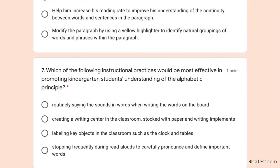Number seven: which instructional practice would be most effective in promoting kindergarten students' understanding of the alphabetic principle? Options are: routinely saying the sounds in words when writing them on the board; creating a writing center with paper and writing implements; labeling key objects in the classroom; or stopping frequently during read-alouds to pronounce and define important words. The last option is eliminated — defining words isn't needed for the alphabetic principle. The alphabetic principle is simply that letters represent sounds, so the best solution is the first option: routinely saying the sounds in words while writing them on the board.